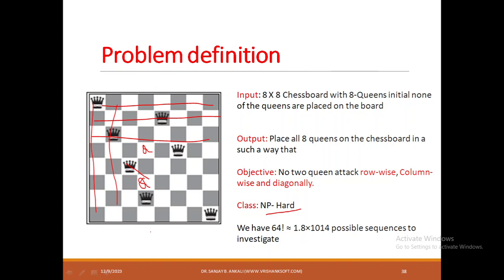When you start solving it by building the state space tree, you will have to investigate around 64 factorial possible states, which is around 1.8 × 10^14 possible sequences. You can see this is a very complicated problem to solve.